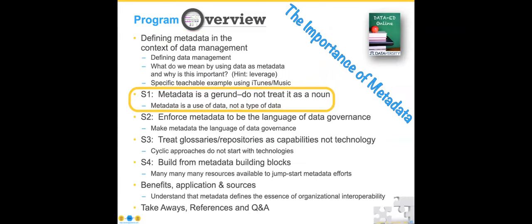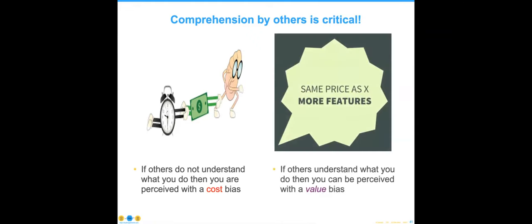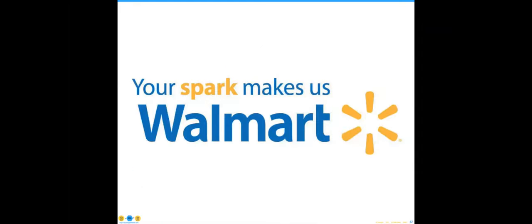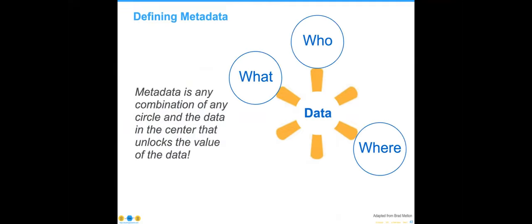Let's dive into the strategies. For those not familiar with English grammar — as Jesse said, comprehension by others is critical. If others do not understand what you do, then you are perceived as a cost to the organization. Whereas if they do understand what you do, it's easier for them to understand the value. The origin of that slide Jesse used came from Walmart — a colleague, Brad Melton, that I was working with out there came up with this as Walmart was going through part of this journey. Data is a combination of any circle and any data that unlocks that value.